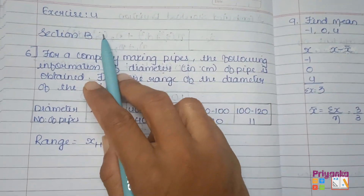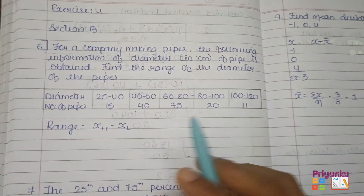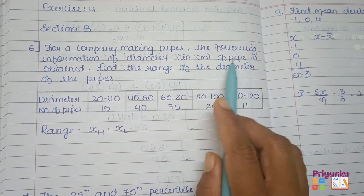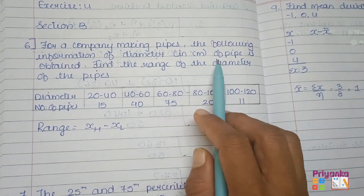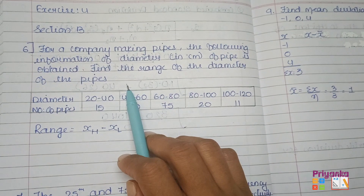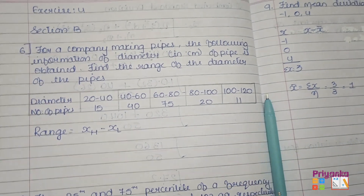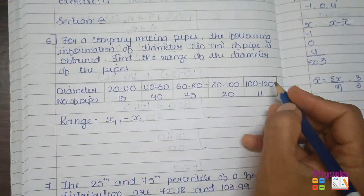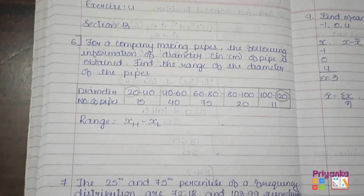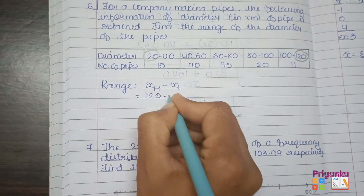We start Exercise 4 from page 165, Section B. For a company making a pipe, the following information on diameter in centimeters is obtained. We need to find the range of the diameter of the pipes. The information is given in a continuous frequency distribution. For the range, we need the highest and lowest observations: 120 minus 20 equals 100 centimeters.